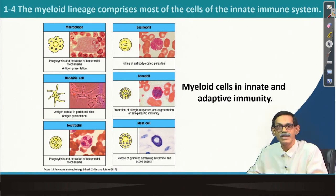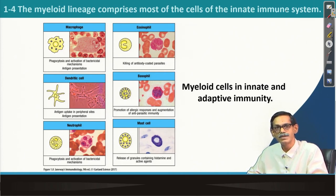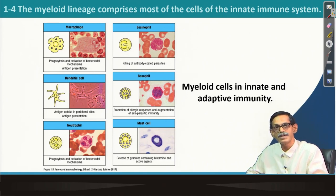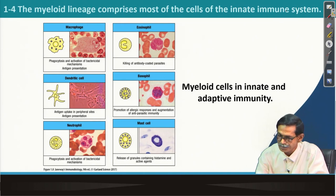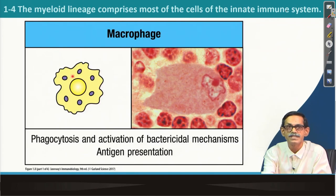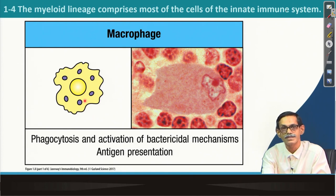What are those cells? Myeloid cells in innate and adaptive immunity — very briefly what they are doing. You will see on the left side there is a cartoon, and on the right side there is a microscopic image. This left side cartoon we are going to use throughout the course. For example, the macrophage — this is the cartoon.